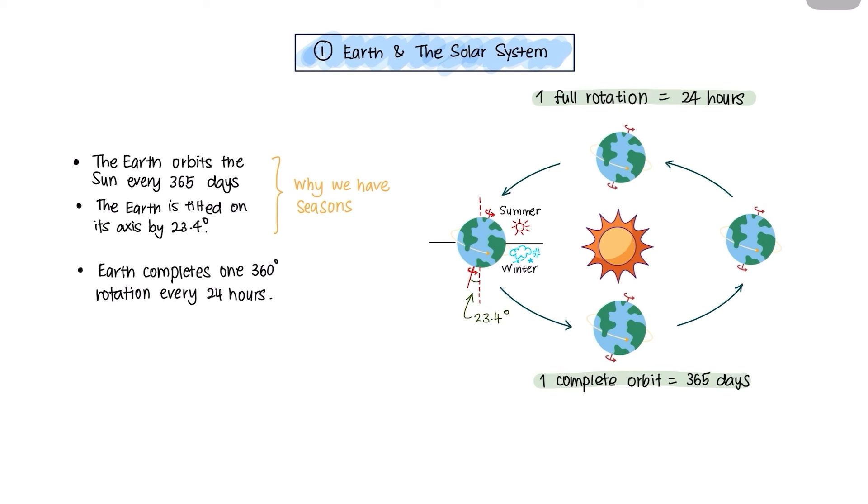The Earth completes one 360-degree rotation every 24 hours. Because of this rotation, we experience the phenomena of day and night.